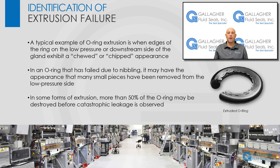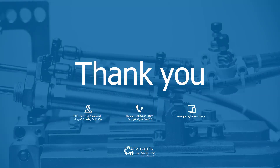So, how do you identify extrusion or nibbling failure? A typical example of O-ring extrusion is when the edges of the O-ring on the low-pressure or downstream side of the gland exhibit a chewed, chipped, or feathered appearance. An O-ring that has failed due to nibbling may have the appearance that many small pieces have been removed from the low-pressure side of the O-ring. In some forms of extrusion, more than 50% of the O-ring may be destroyed before catastrophic leakage is observed.